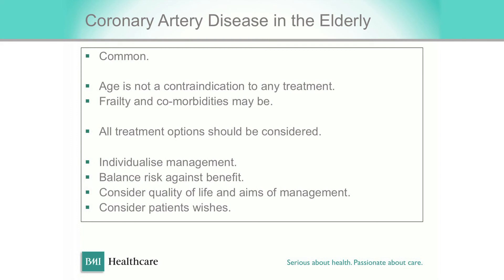In conclusion: coronary artery disease in the elderly is very common. Age is not a contraindication to treatment, but frailty and comorbidities may be. All treatment options should be considered but management must be individualised — everything must balance risk against benefit specific to that patient. Consider what you are aiming to achieve, and think about quality of life more than quantity of life. If someone is wheelchair-bound with osteoarthritis and COPD, fiddling with the heart is unlikely to help. But if you have a fit, well, independent man, you should try to do everything you would do for a younger patient. And of course, consider the patient's wishes — sometimes, especially in the very elderly, accepting those wishes without too much discussion is appropriate.